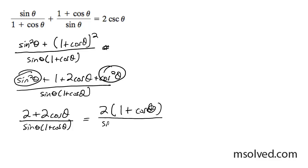So I get sinθ(1+cosθ). So what happens here, I cancel these out and I'm left with 2/sinθ, which is equal to 2cscθ. That's it, that's how I solve it.